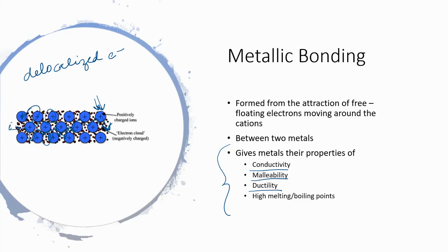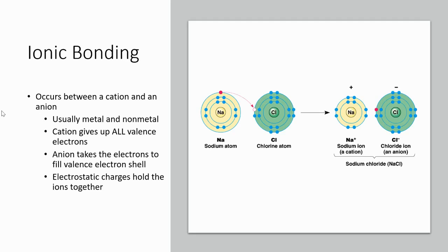And then the high melting and boiling points: all of these nuclei are attracted to all of these negative electrons. Not so attracted that they hold on tightly, but attracted enough that they stay close to them. So while we can move the nuclei around within that structure, it's going to take a lot of energy to pull the nuclei apart and make them spread out and melt. That explains the high melting and boiling points.